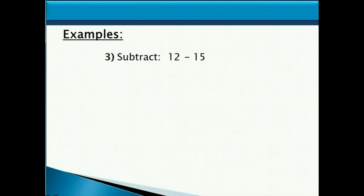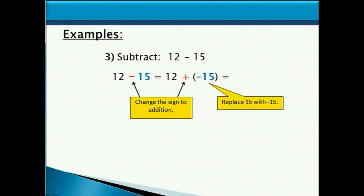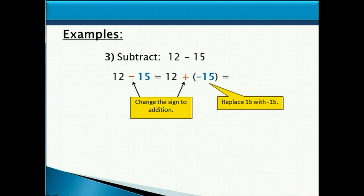For example, if we want to subtract 12 minus 15, we can rewrite that by changing the subtraction sign to addition and then changing the 15, which is positive originally, to a negative 15. So now we have two numbers being added that have opposite signs. We find the difference between 12 and 15, which is 3, and the bigger number is negative, so we end up with negative 3.